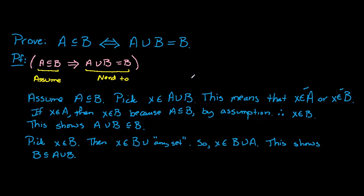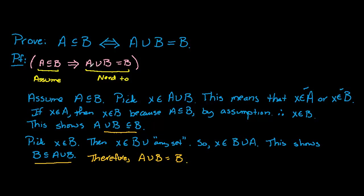Putting these two pieces together — A union B is a subset of B and B is a subset of A union B — we have A union B equals B. So we've shown the implication going from left to right. You may want to try the implication going the other way — pause the video, and I will resume in a moment to show the proof in the other direction.